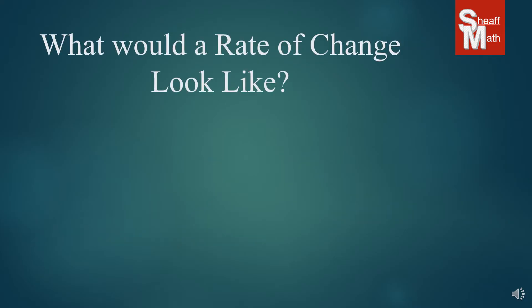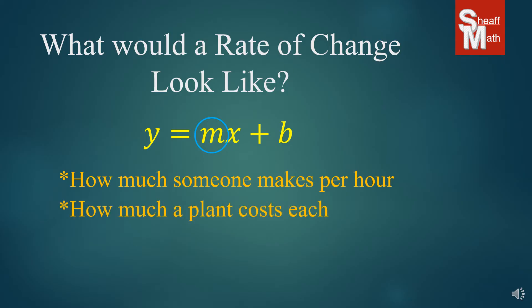Now what does the rate of change look like in real life? Because we do a lot of math on graphs and everything, but it really has nothing to do with real life. And so what does that m look like? Well here's some examples. How much someone makes per hour. This is a rate of change. For every hour you work, let's say you make $12 per hour, you'd keep adding $12 each hour, and that's how much you would make. That's a rate. How much a plant costs each. If you bought one plant or two plants or three plants or four plants, you would keep adding the cost of each plant each time you decided to buy another one.